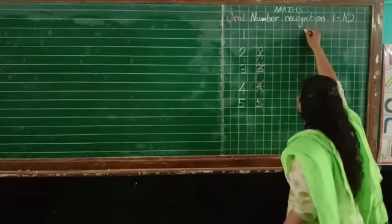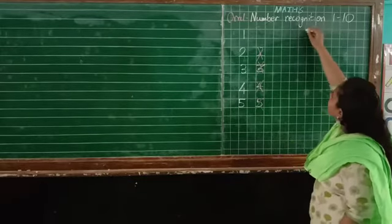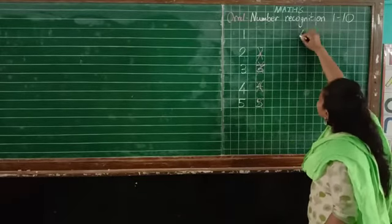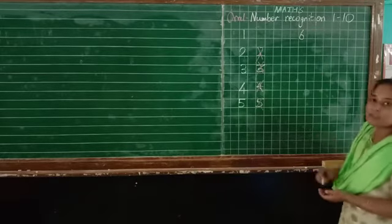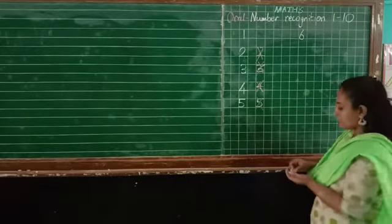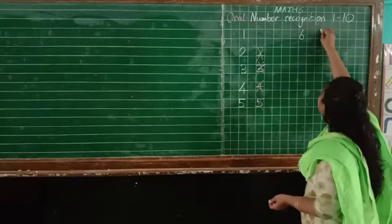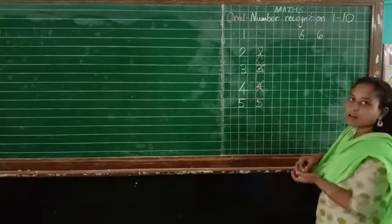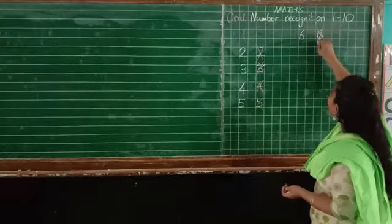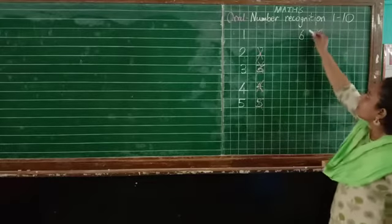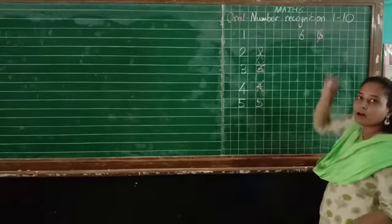Now, 6. Six will be? Start from center. Slanting and around. This is called 6. Okay? See, if you write like this, then this 6 is wrong. Okay? Slanting and around, 6.